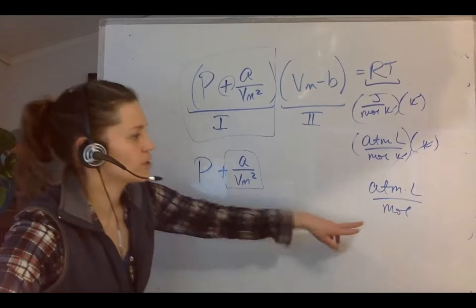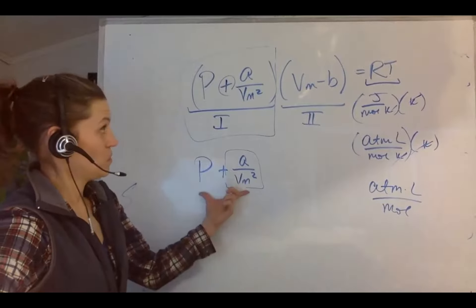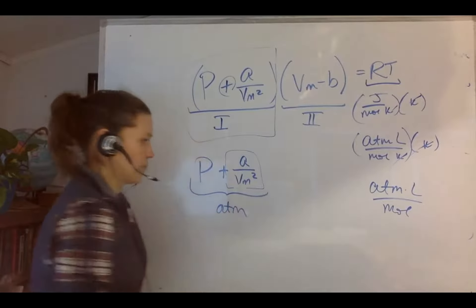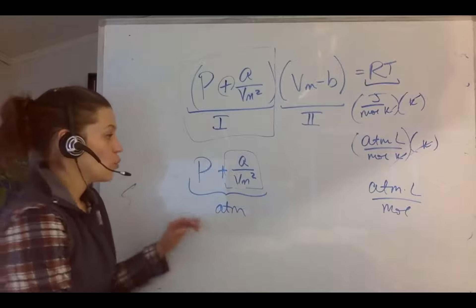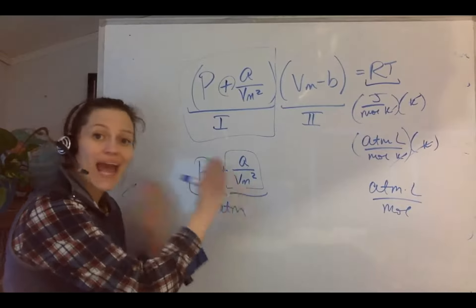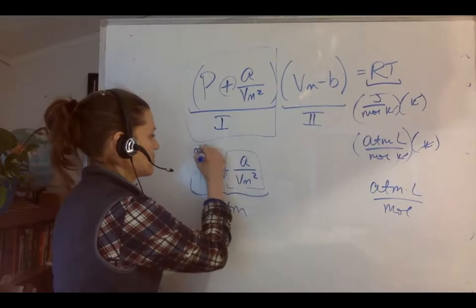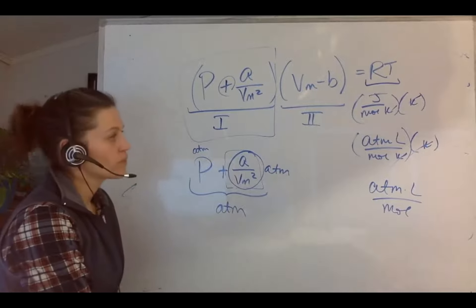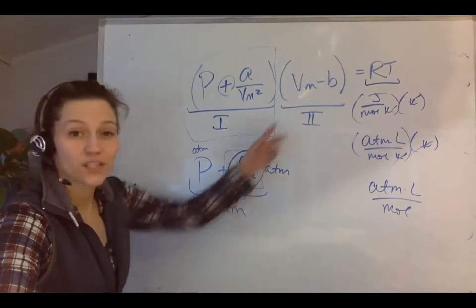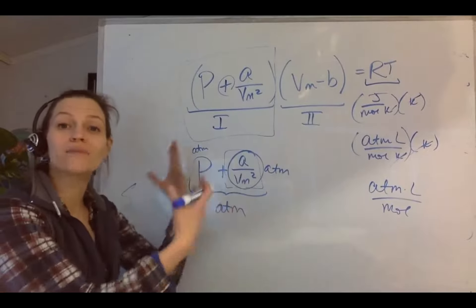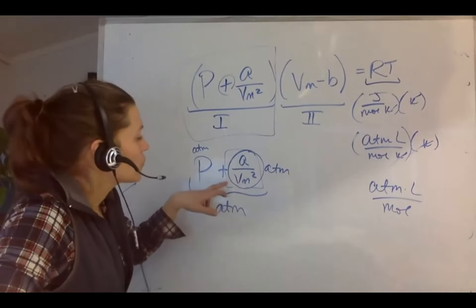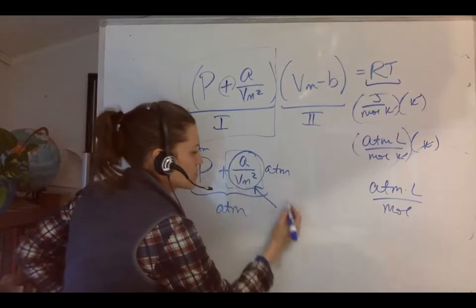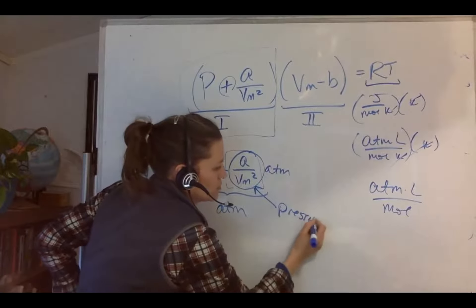Let's just look at thing one. What does it mean to add two things together? Pressure plus a over Vm squared, what units does that have to be to add to pressure? I will say atmospheres liters per mole kelvin. Kelvin cancels, this means I'm left with atmosphere liter per mole. What unit does this have to be? Atmospheres.